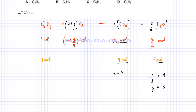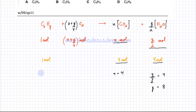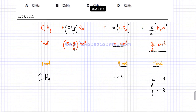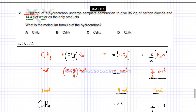The final answer is X = 4 and Y = 8, so the hydrocarbon is C4H8. You can verify this by writing a balanced equation — it gives four moles of CO2 and four moles of H2O, which matches the given data. The answer is C4H8, which corresponds to option D.